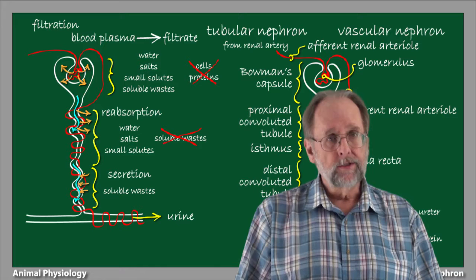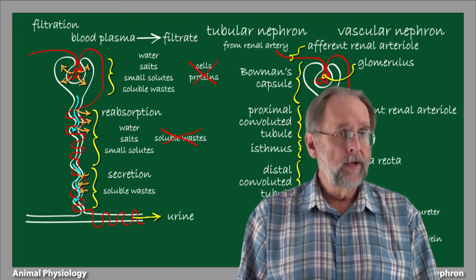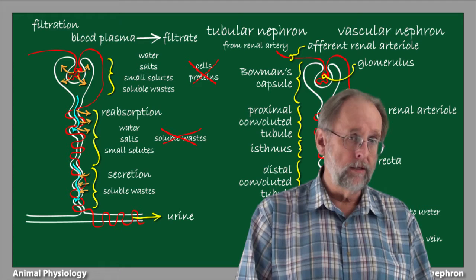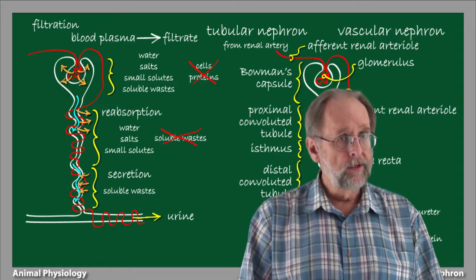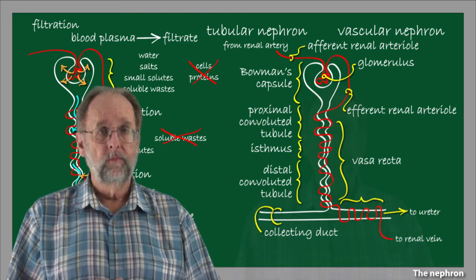Thus, we come back to the basic logic of the nephron. It's a means of translocating filtrate from the body to a controlled environment that is topologically outside the body, and then modifying its composition in ways that produces a very different liquid, urine, that is ultimately excreted from the body. In short, the nephron produces filtrate and converts it into urine.